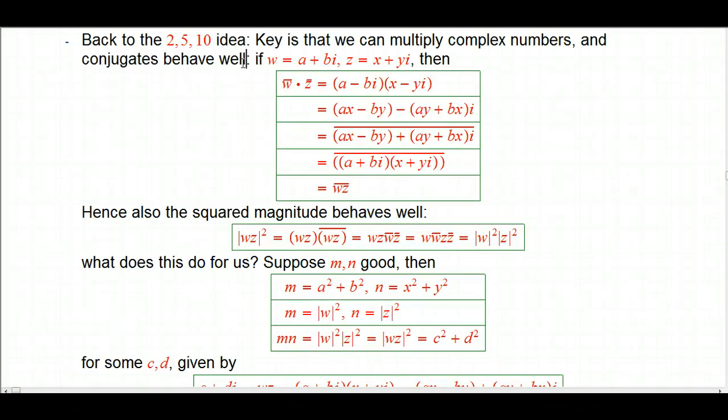The other key thing is that conjugates behave well. Because we've seen that to express 10 as the sum of squares, we take a complex number and multiply it by its conjugate. Let's see how those 2 concepts, multiplication and conjugates, interact with each other. There's a very straightforward proof that the product of 2 conjugates is the conjugate of the product.